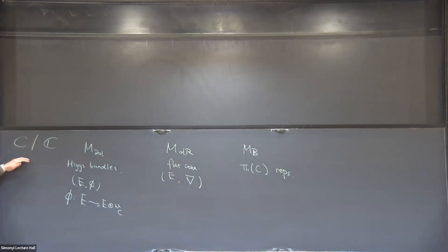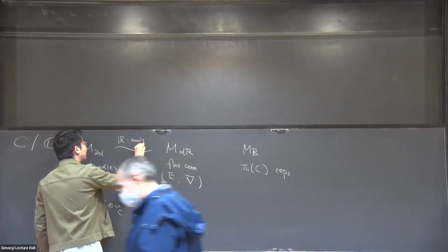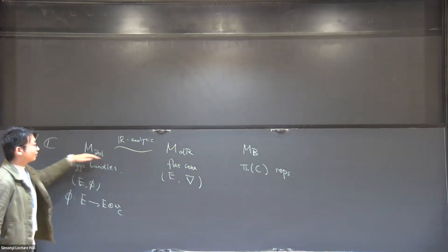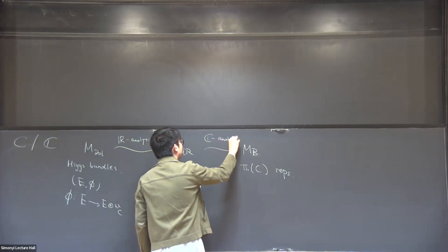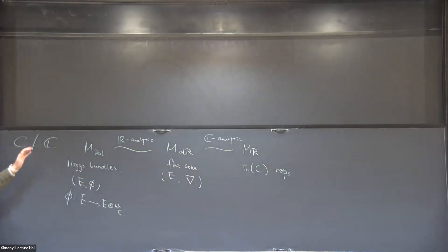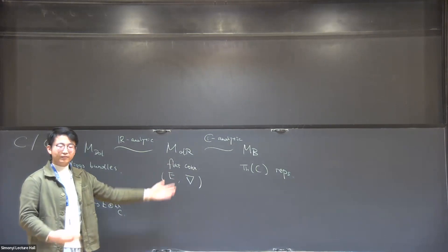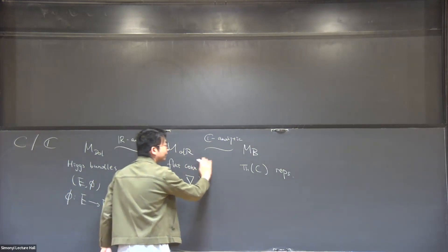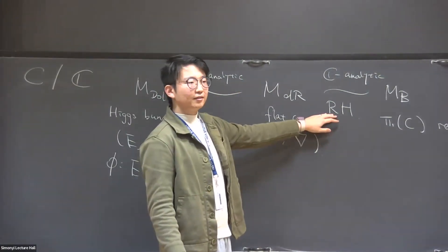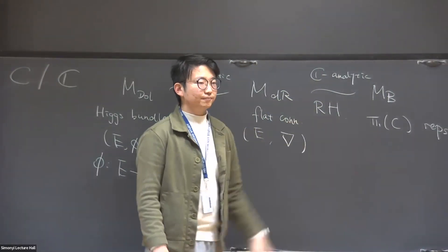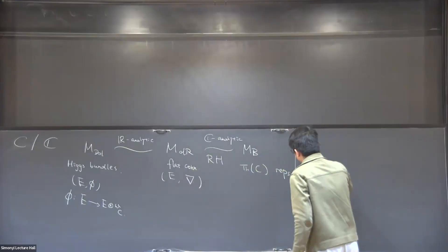The non-abelian Hodge theorem over the complex numbers tells us that we have an R analytic isomorphism between the Dolbeault moduli space and the de Rham space, and a complex analytic isomorphism between the de Rham space and the Betti moduli space. The Dolbeault, de Rham, and Betti are supposed to be the non-abelian analog of the Dolbeault cohomology, the de Rham cohomology, and the Betti cohomology. Actually this part, the de Rham and the Betti part, is from a more classical correspondence, the so-called Riemann-Hilbert correspondence, flat connections corresponding to local systems.